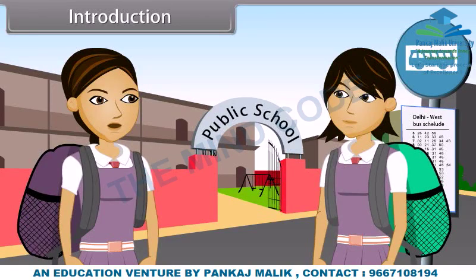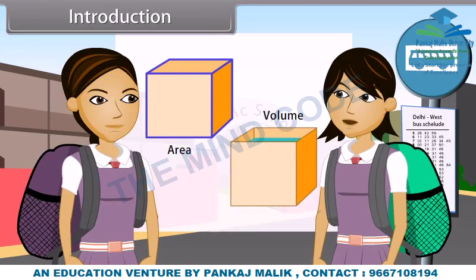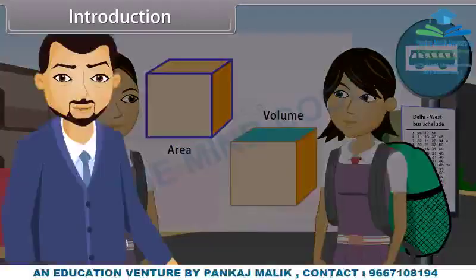I do not understand what you are saying. What is the surface area and the volume? Surface area is exactly what it sounds like — the area of all the outside surfaces of a three-dimensional object. And volume is all of the space inside a three-dimensional object. In this lesson, you will learn more about both of these concepts as well as how to compute the surface area and volume of a combination of solids.